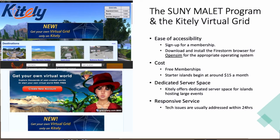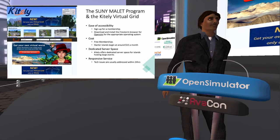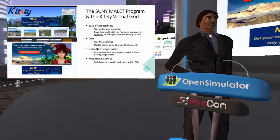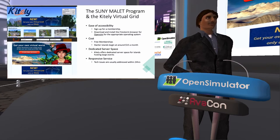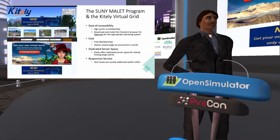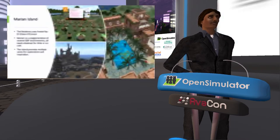The SUNY MALLET program — the Master of Arts in Learning with Emerging Technology — uses the Kitely grid. I don't mean this as a plug for Kitely; we use it for a number of reasons. There are many great grids out there on the hypergrid, but Kitely provides a few key things: it's very inexpensive, free to students to download, and islands begin at around $15 each. Kitely offers dedicated server space, so when you're hosting large events you're not sharing with everyone else and causing serious lag. Kitely is also exceptionally good with responsive service — even with my questions, they get back to me within about 24 hours.